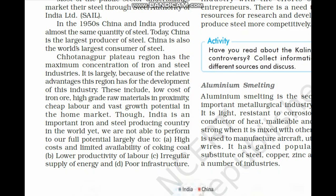Why are so many iron and steel industries located in Chhota Nagpur region? The advantages are: low cost of iron ore because it is available nearby, high-grade raw materials in proximity, cheap labor, and vast growth potential in the home market. These are all the reasons for the concentration of iron and steel industries in the Chhota Nagpur Plateau.